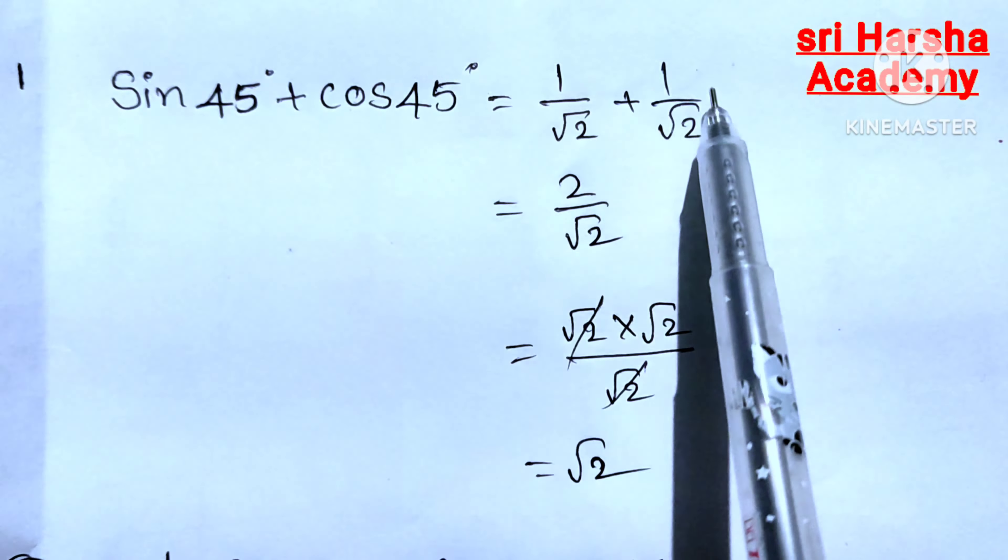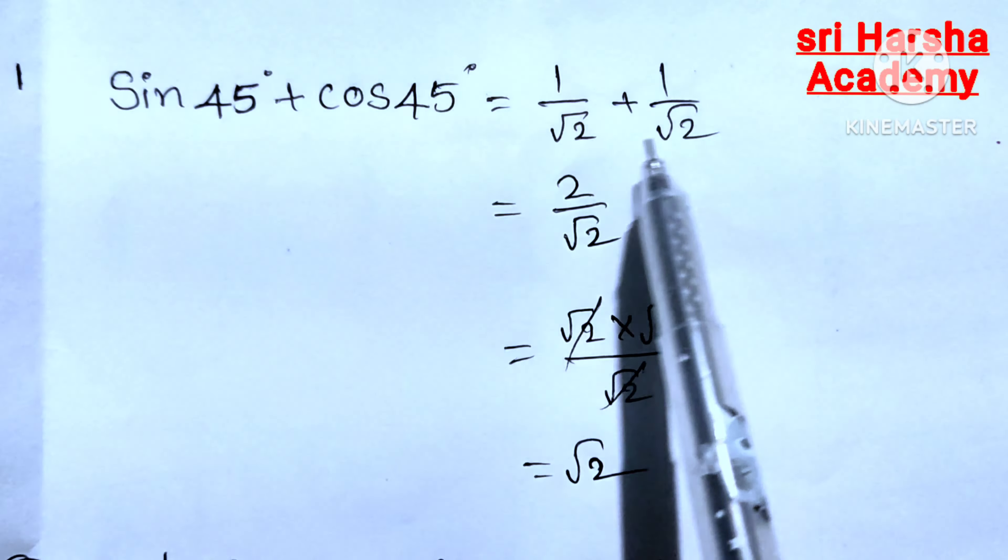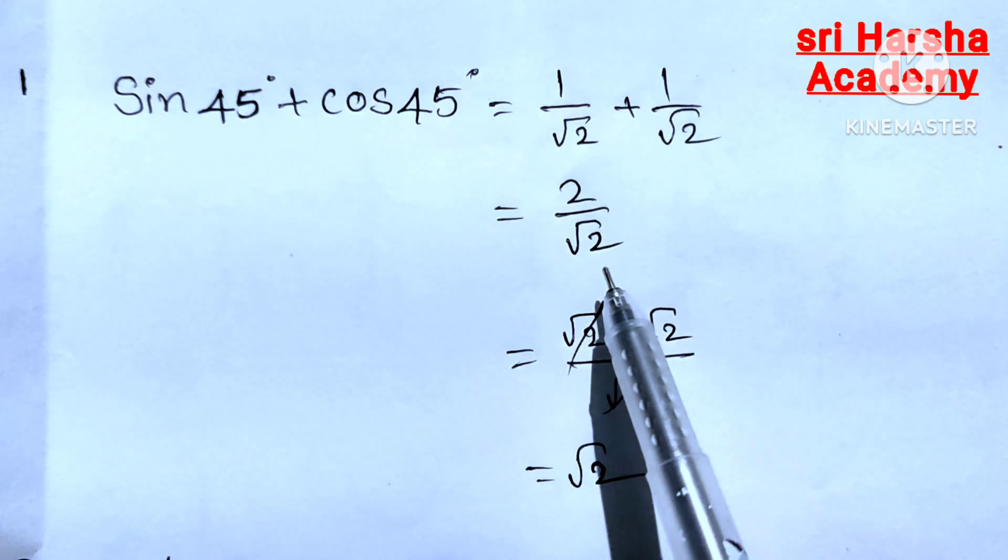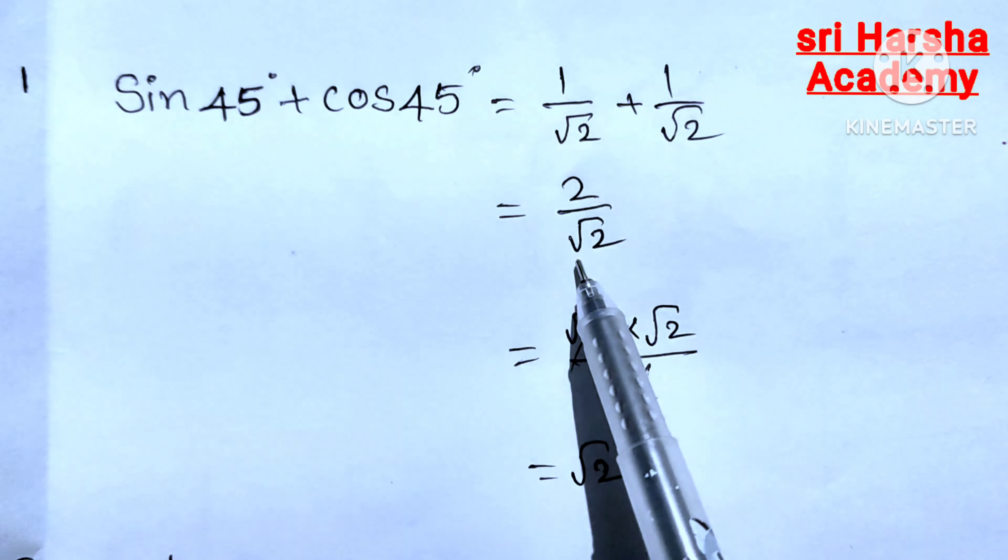1 by root 2 plus 1 by root 2. Now we are adding these two fractions and then we get 2 by root 2. Here numerator is 2, denominator is root 2.